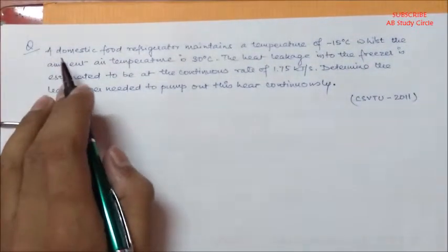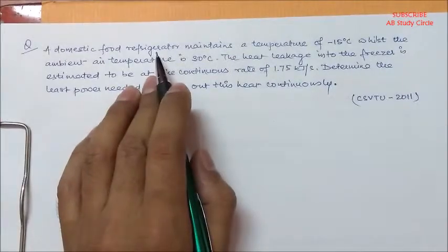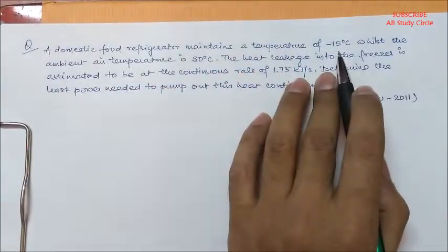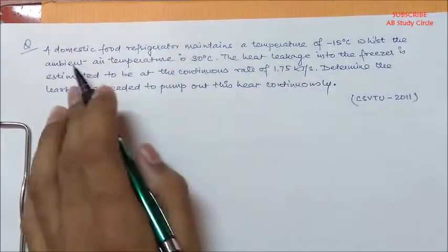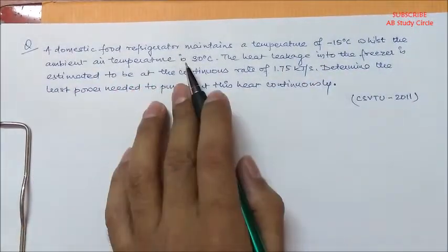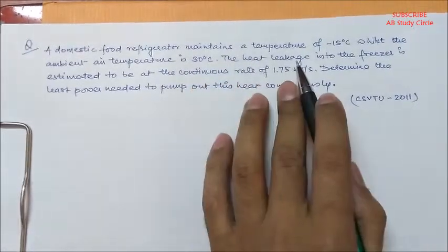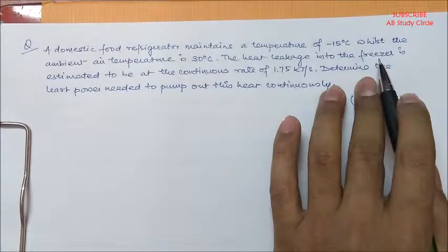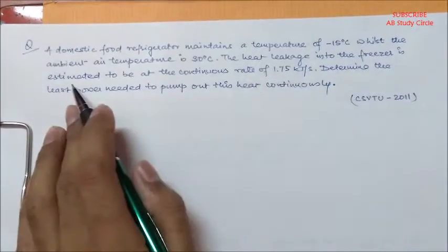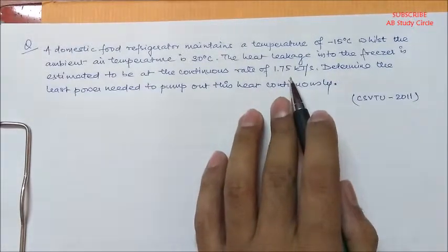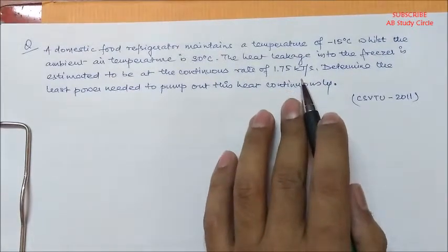A domestic food refrigerator maintains a temperature of minus 15 degree Celsius whilst the ambient air temperature is 30 degree Celsius. The heat leakage into the freezer is estimated to be at the continuous rate of 1.75 kJ per second.